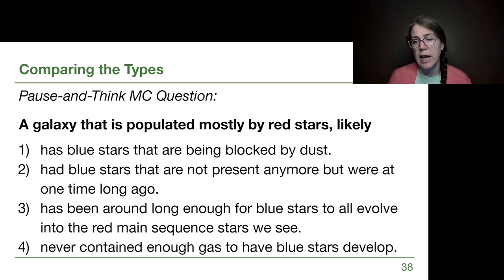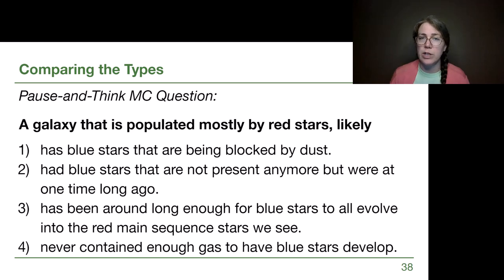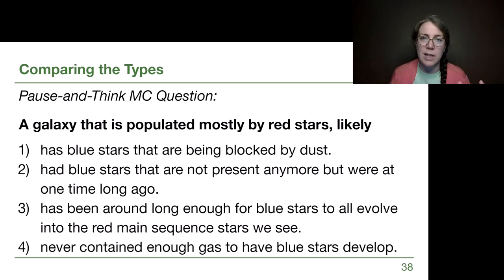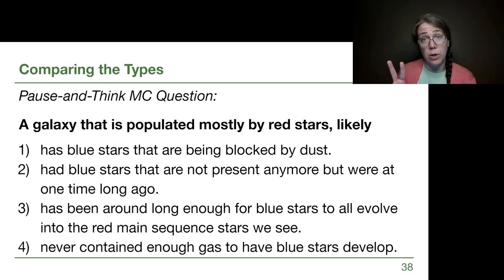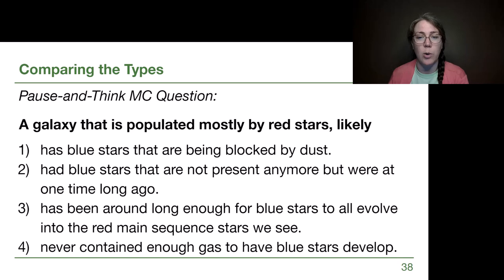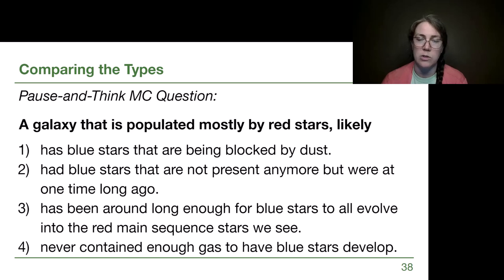For option four — the galaxy never contained enough gas to have blue stars develop — stars form with a distribution called the IMF, the initial mass function. There's no way for a galaxy to decide it won't make blue stars; if it's going to make stars, it's going to make a range of stars. So our best answer is option two. It's a tough question — make a note of what tripped you up and come back to it before quizzes or any other assessment.